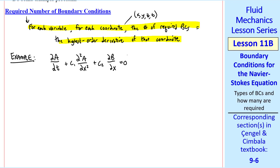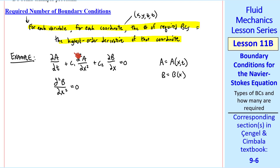For our first example, I'll make up a set of equations. Here we have two variables: a is a function of x and t, and b is a function of x, and we have two equations since we have two variables. Using our definition above, let's pick variable a and coordinate t. Since this is first order, for t we need one boundary condition — which we'll actually call an initial condition — typically for time.